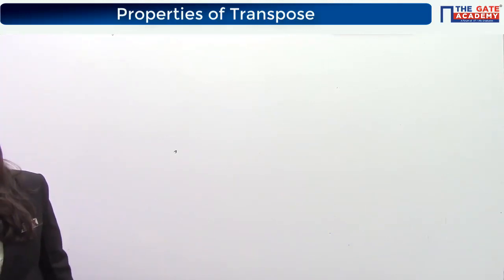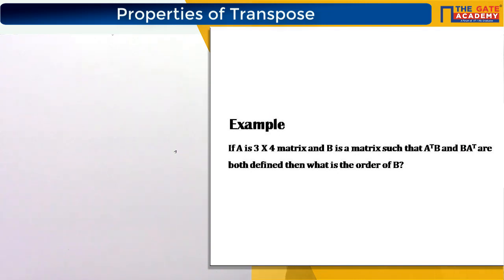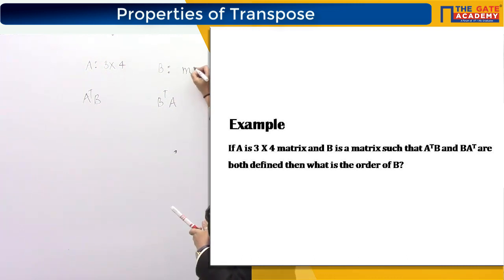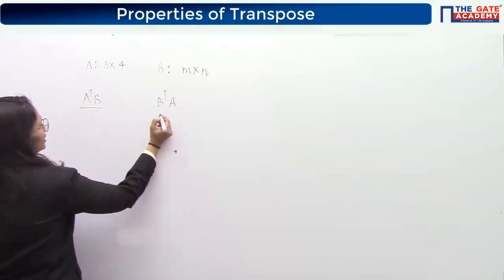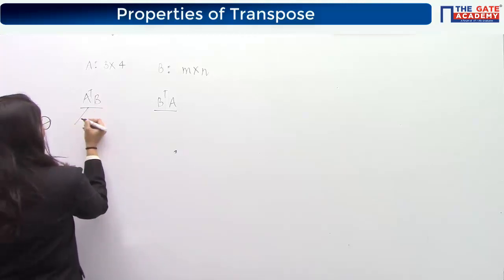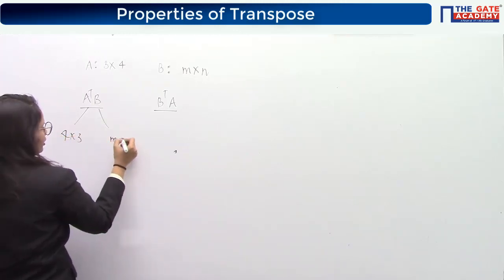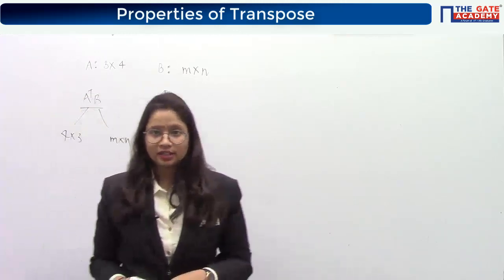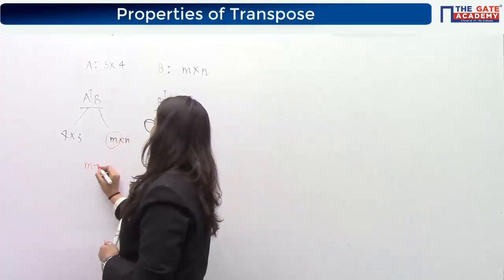Let's look at a question on your slide. B has an order of M×N. It is given that A transpose times B is defined, meaning this multiplication is defined. The order of A transpose is 4×3, and this is M×N. Since the product is defined, M equals 3.